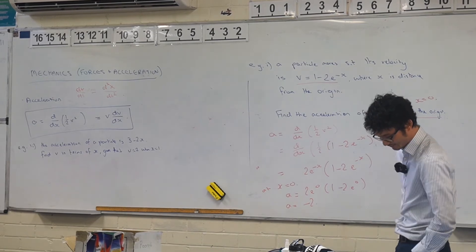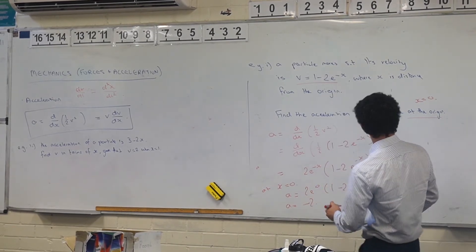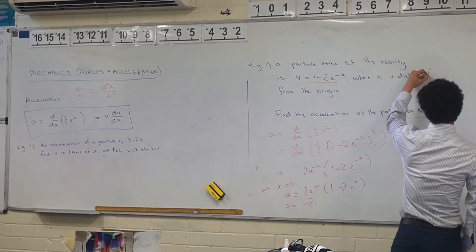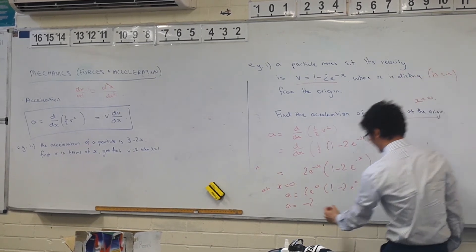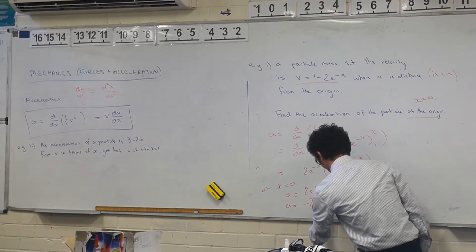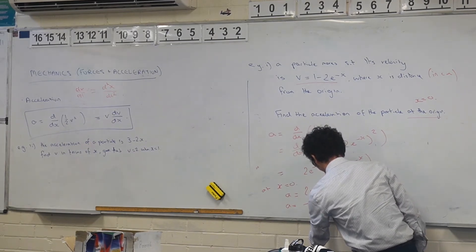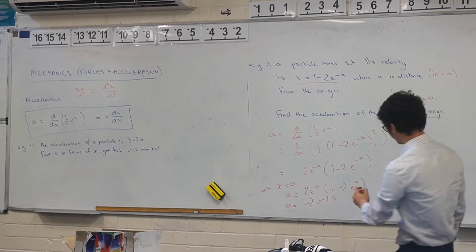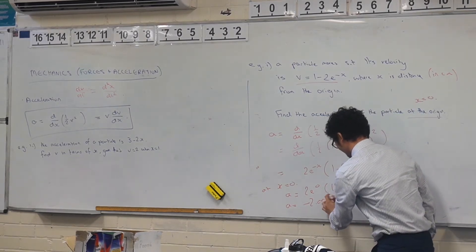We should probably have units. Where x is the distance, let's say in cm. So the acceleration would be cm per second per second.